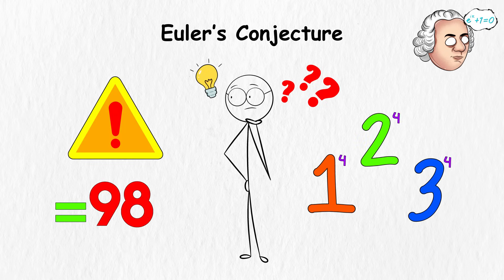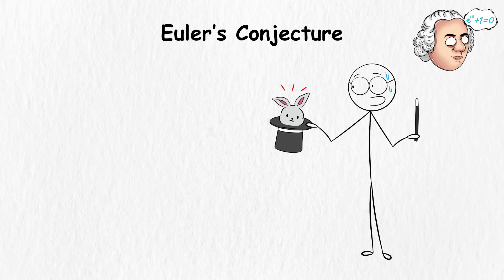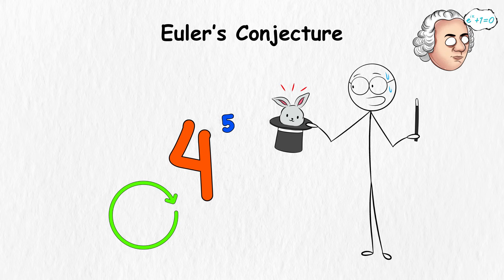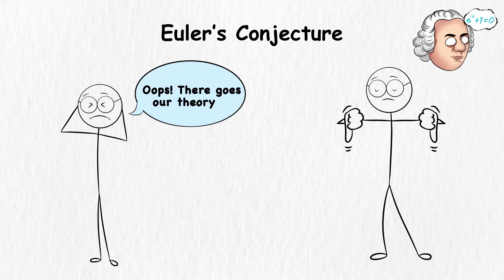But here's the problem. Math geeks have tried countless numbers and powers, only to find Euler's Conjecture occasionally fails, like a magician's disappearing act. For example, for the 5th power, there are numbers that fit the pattern, proving Euler's guess wrong, and making mathematicians groan. Oops, there goes our theory, so you're probably wondering why it's unsolvable.